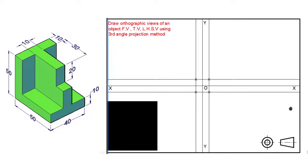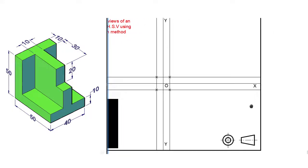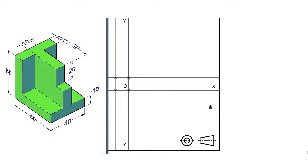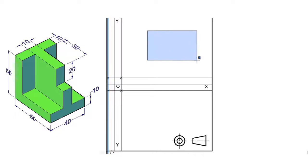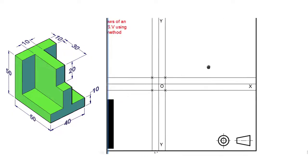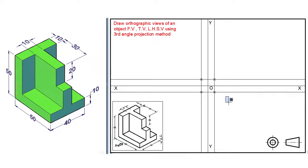In our problem, we have to draw a front view, top view, and left hand side view. So we will assume this is our first quadrant, this is our second quadrant, this is our third quadrant, and this is our fourth quadrant. So we will draw a front view here, top view above the front view, and left hand side view at the left side of the front view.